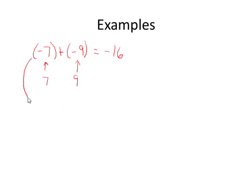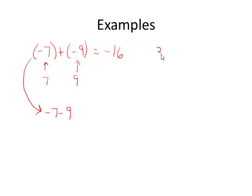By the way, I'm not really a big fan of these double signs. I tell my students in class to rewrite this problem as negative 7 minus 9 — it can be done the same way. Also, we already knew that if we added two positive numbers with the same sign, like 3 plus 5, the sum is positive as well.